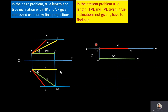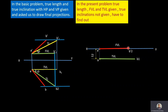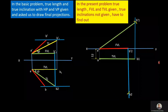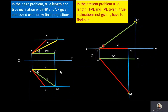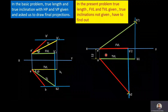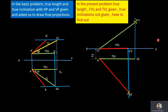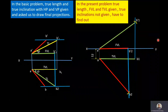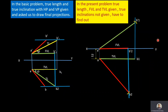In the present problem, we have to find the true inclinations and draw the final projections. A'B2' is the front view length and AB1 is the top view length. For the top view length AB1, we will draw the true length in the front view, and for the front view length A'B2', we will draw the true length in the top view. Then we measure the inclinations of the true lengths with HP and VP and draw the final projections.